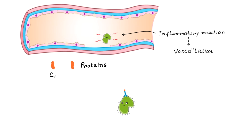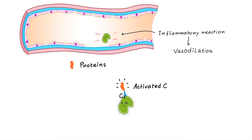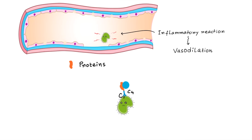When complement protein C1 hits the FC portion, it is activated and binds with it. When it becomes active, it calls some other friends. The protein that comes next is C4, which binds and gets activated. After activation, an interesting thing happens — the protein gets clipped into two parts. One part goes away and the other part remains attached with the previously activated molecule. We will discuss the functions of those two parts later.